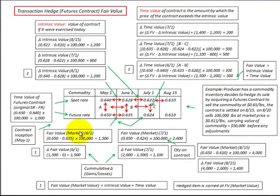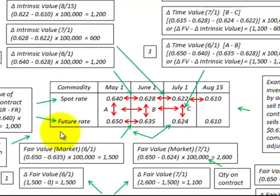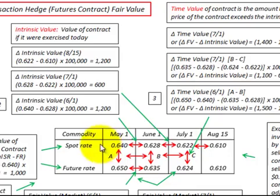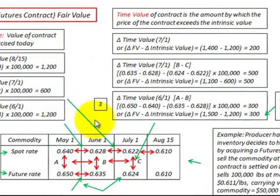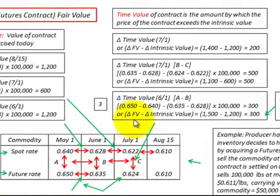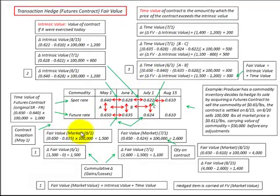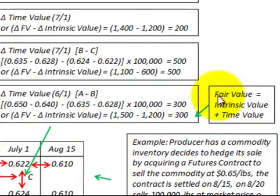In summary, the fair value or market value of a derivative is comprised of its intrinsic value plus its time value. The fair value is based on changes in the future prices or future rates of the derivative. The intrinsic value is based on changes in the spot rates or spot prices. The time value is based on changes between the spot rates and future rates between periods, or equivalently, the change in fair market value minus the change in intrinsic value — all based on the equation: fair value equals intrinsic value plus time value.